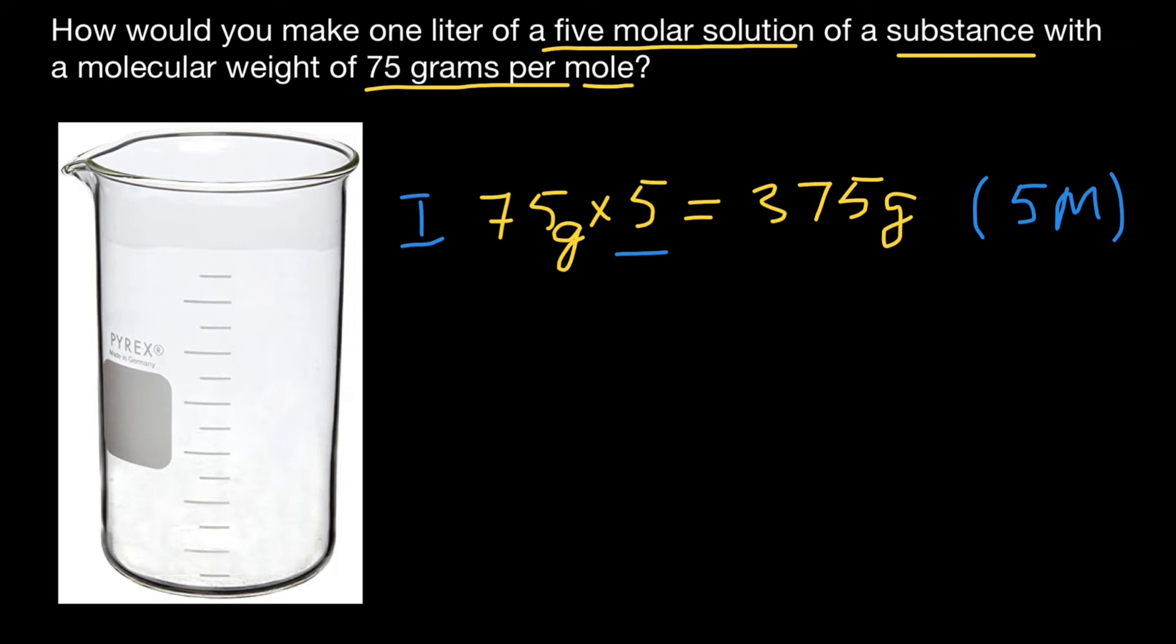And our second step would be to add this 375 grams in this beaker. So let's say it's going to take this much space. The substance can be a solid or it can be a liquid. And step number two is going to be, we have to add solvent.